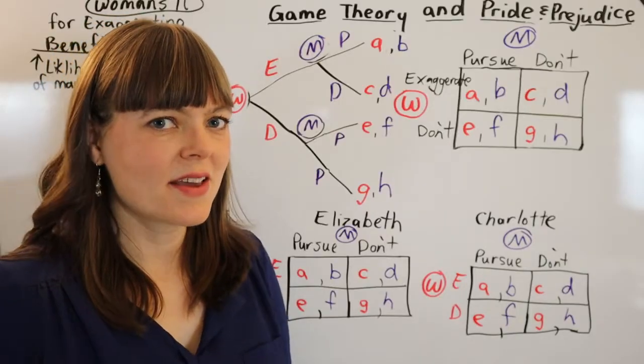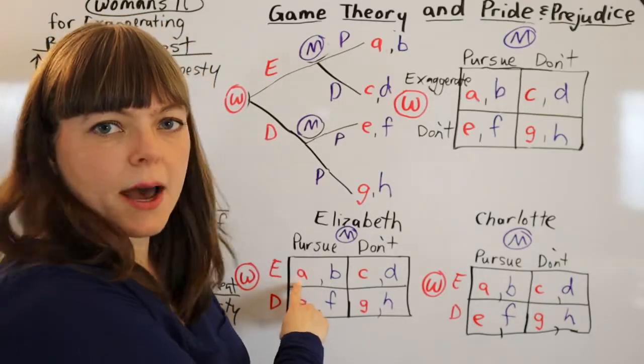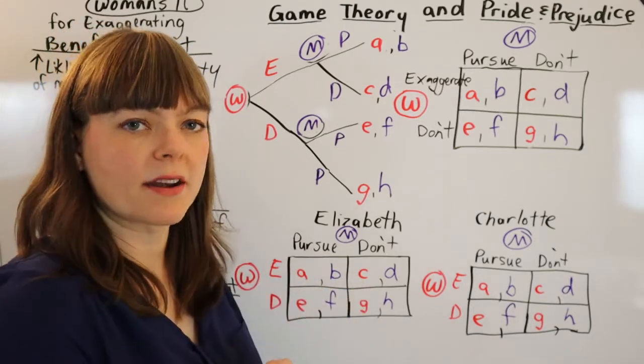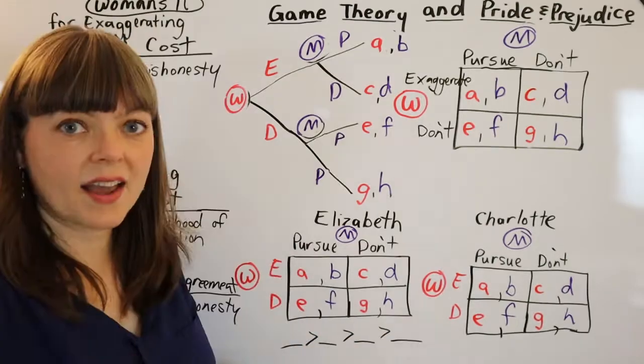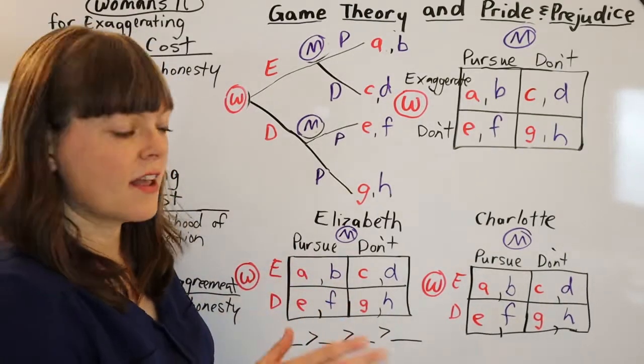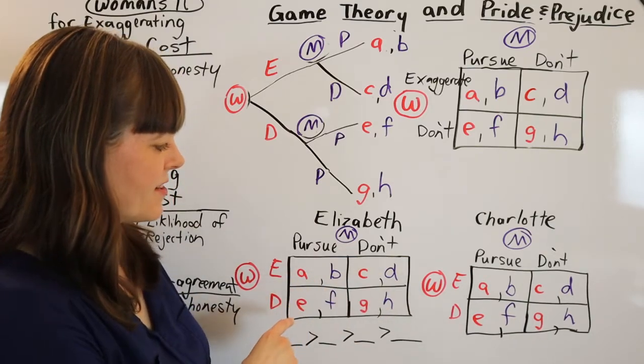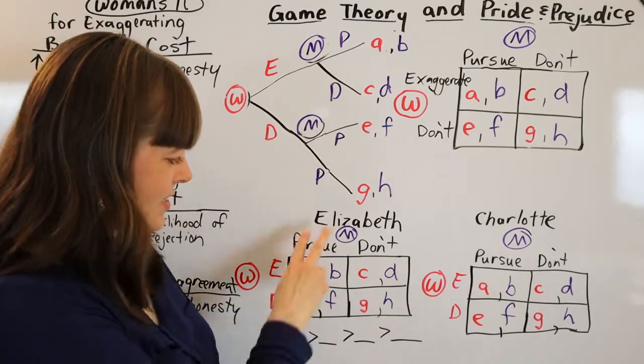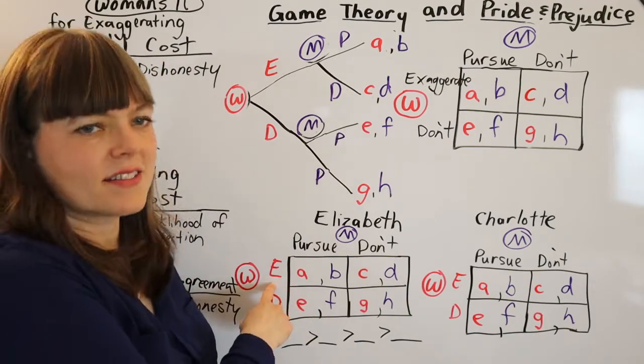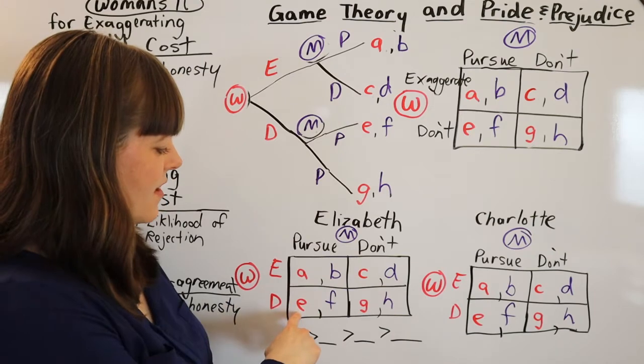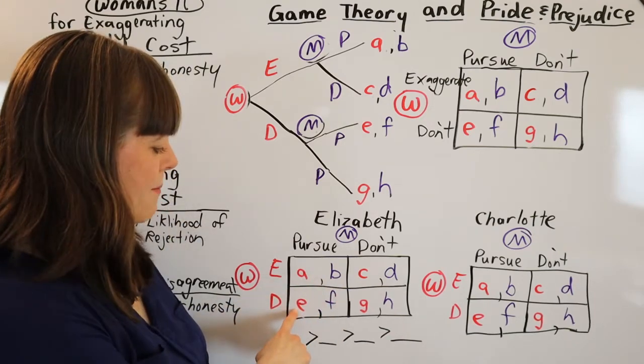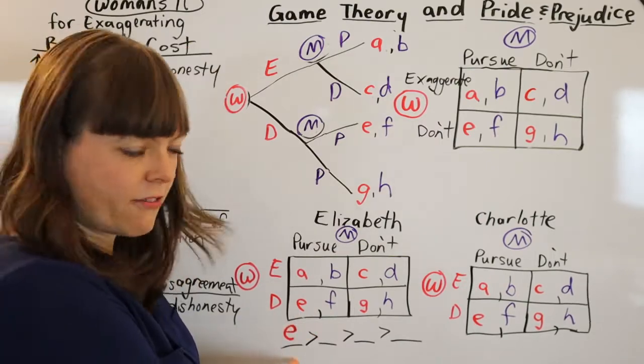The next step is going to involve coming up with an order of preference among the four payoffs for the woman. And I recommend starting by figuring out which box is her favorite and which box is her least favorite. So obviously, she wants to be pursued, and she doesn't want to have to exaggerate. Exaggerating does have some costs associated with it. So the woman's favorite box is this one, and her payoff in that box is E. That's her favorite of the four.